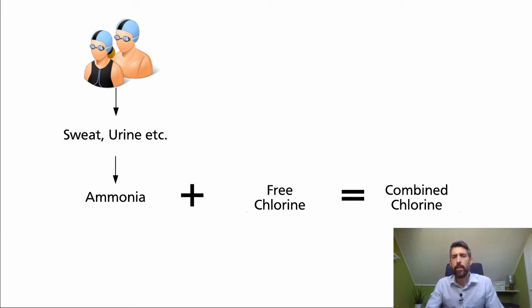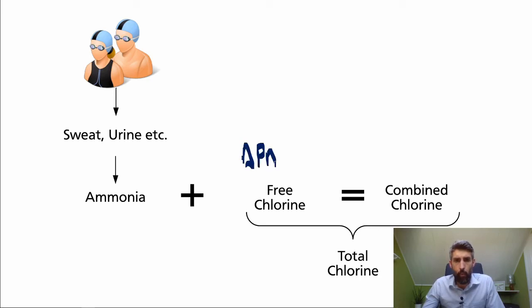There's no tablet test for combined chlorine. There's a DPD test, the DPD-1 test, that will tell you how much free chlorine you have in the pool. But in order to find out how much combined chlorine you've got in the pool, we measure something called total chlorine, which is exactly what it sounds like. It's the free chlorine plus combined chlorine equals the total chlorine. And this is measured with a DPD-3 tablet. So what you've got is the free chlorine measured with DPD-1, total chlorine measured with DPD-3.